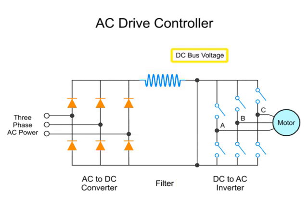The filtered DC bus voltage then passes through to the inverter. At the inverter, an array of fast-acting switches convert the DC bus voltage into pulses at a constant magnitude that are proportional to the DC bus voltage.